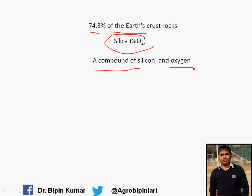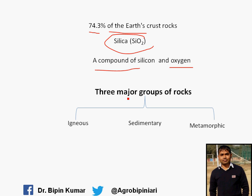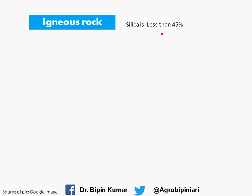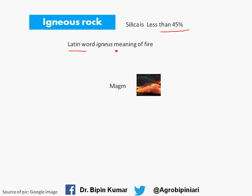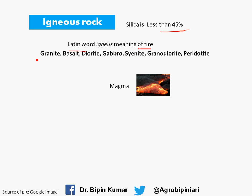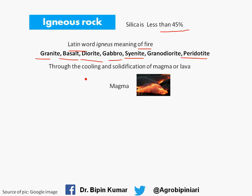Now I am going to discuss the types of rocks. Rocks are mainly of three types: igneous, sedimentary, and metamorphic. I'll start with igneous rocks. Igneous rocks have silica less than 45%. The word igneous is derived from the Latin word meaning fire, because it forms from magma. Examples include granite, basalt, diorite, gabbro, syenite, granodiorite, and peridotite.